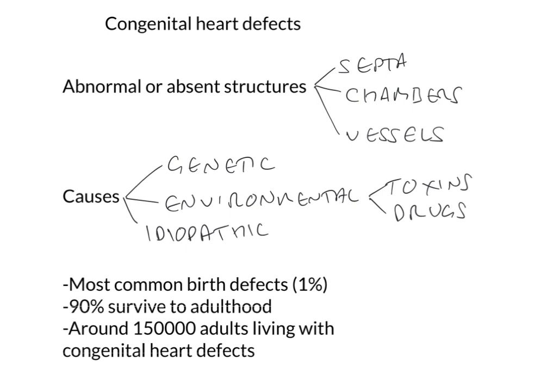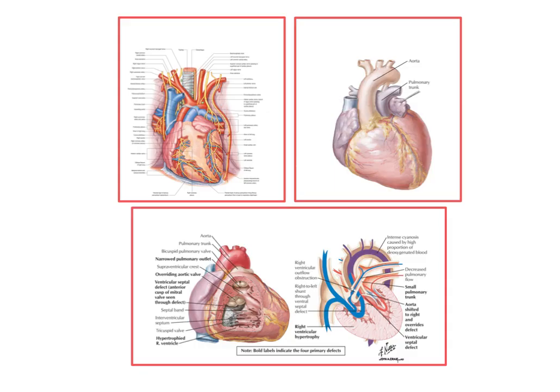This has important implications. Consider, for example, a woman with a congenital heart defect who then wants to have a child. If she has any kind of cardiovascular compromise, she will need very specialist care in order to go through with a successful pregnancy. We're now going to consider three of the more interesting congenital heart defects, two of which we should be able to work out based upon the embryology we have already studied.